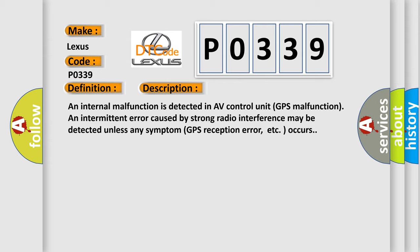GPS malfunction and intermittent error caused by strong radio interference may be detected unless any symptom GPS reception error, etc. occurs.